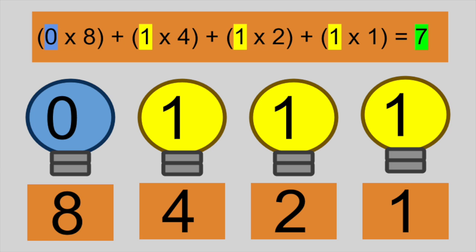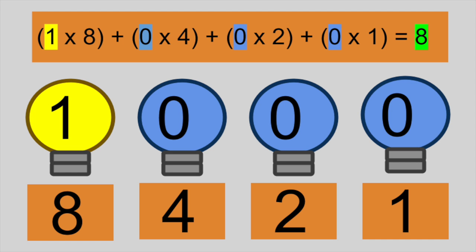You might be recognizing a pattern. To get the value 8, we turn on the fourth bulb only. This gives us 1 times 8 plus 0 times 4 plus 0 times 2 plus 0 times 1. To represent 9, we write 1, 0, 0, 1 in binary. It's 8 plus 1.